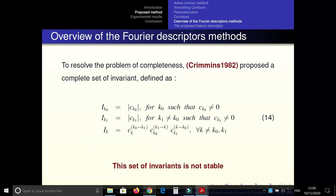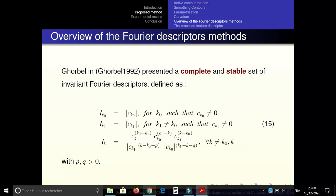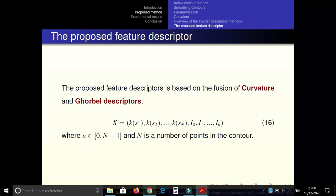To overcome the problem of stability, Forberg presented a complete set of invariants defined as follows. The proposed feature descriptor is based on the fusion of curvature and Forberg invariants, where n is a number of points in the contour.